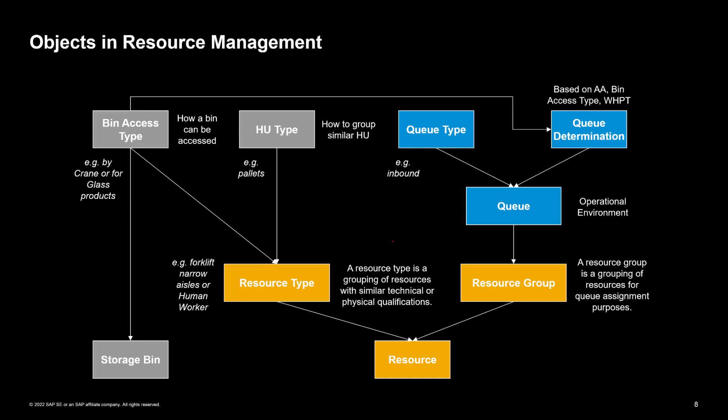The resource group is also assigned to a resource and is used in warehouse management to group together several resources with the same business characteristics. For example, you can create a resource group which is responsible for the inbound or outbound part. This means that resources can be assigned to warehouse orders in an optimized way. A queue represents a container or pool in which warehouse orders to be processed are stored. Queues are used to better group warehouse orders depending on business requirements. For example, you can create a queue for inbound, outbound, or internal processes.